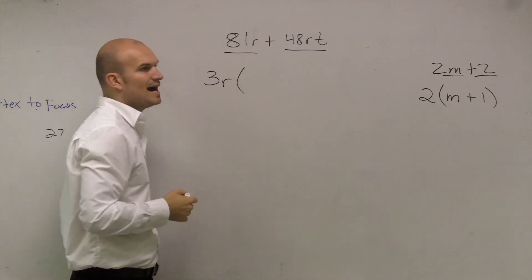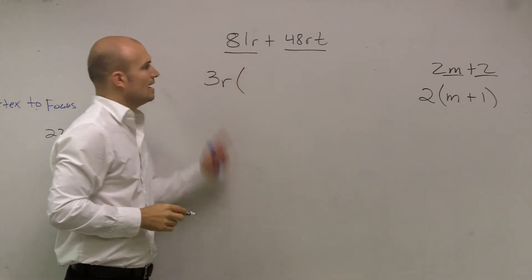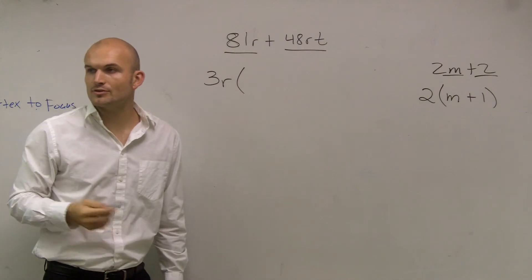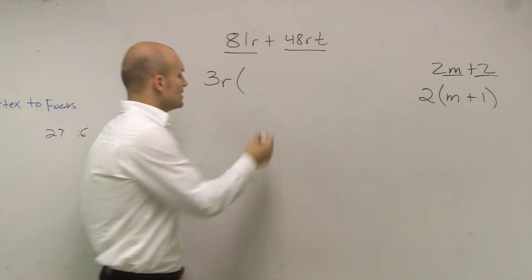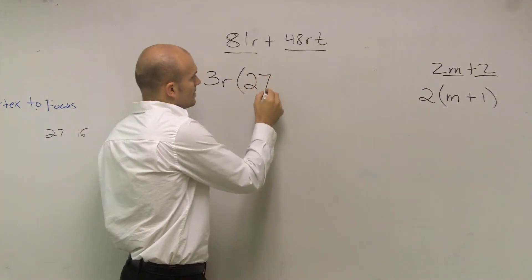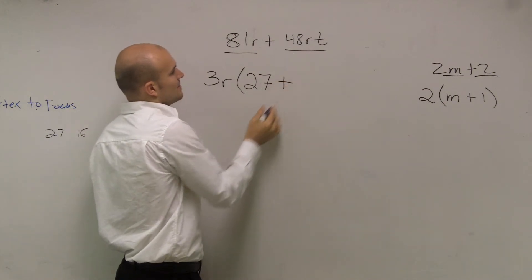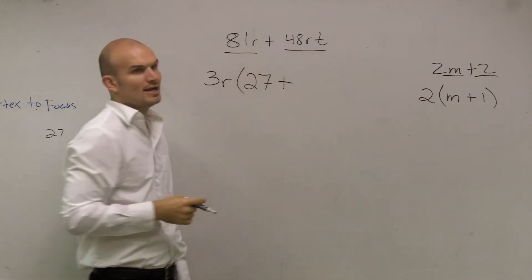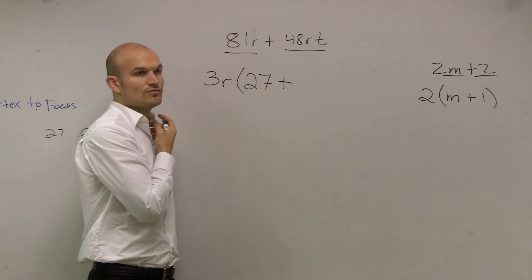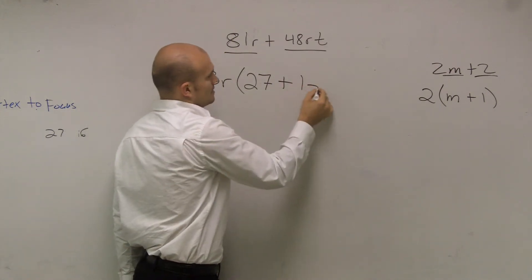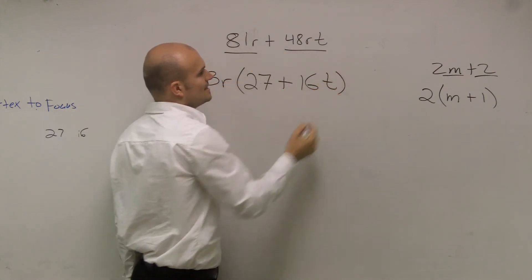So what happens when I divide 81r by 3r? Well, how many times is 3 going to 81? It's 27. R goes into r one time, so I don't need to write a one. Plus, then you say, now 48rt divided by 3r. How many times does 3r go into 48? 16. R goes into r one time, but there's still going to be a t left there.